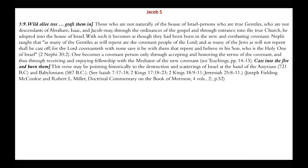Chapter 5, verse 9: the 'wild olive tree grafted in' — those who are not naturally of the house of Israel, true Gentiles who are not descendants of Abraham, Isaac, and Jacob, may through the ordinances of the gospel and entrance into the true church be adopted into the house of Israel. With such, it becomes as though they had been born in the new and everlasting covenant. Nephi taught that as many of the Gentiles as repent are the covenant people of the Lord. One becomes a covenant person only through accepting and honoring the terms of the covenant, and thus through receiving fellowship with the mediator of the new covenant, that is Christ.